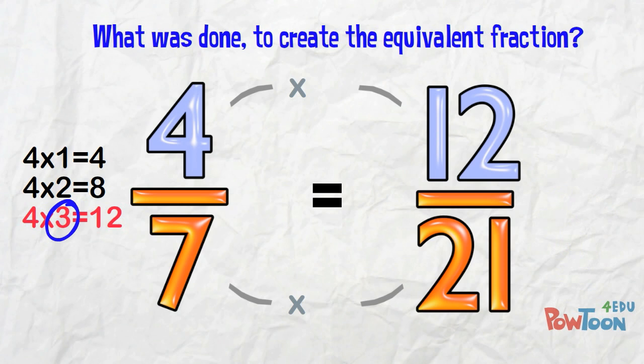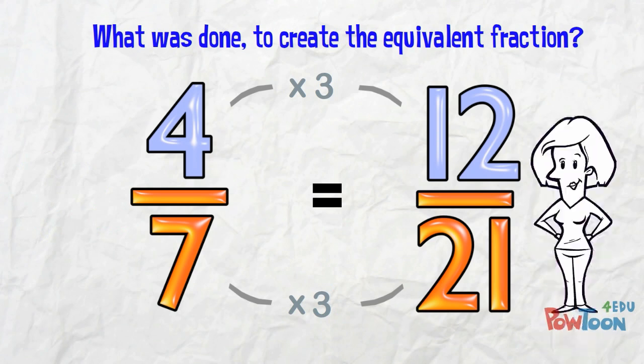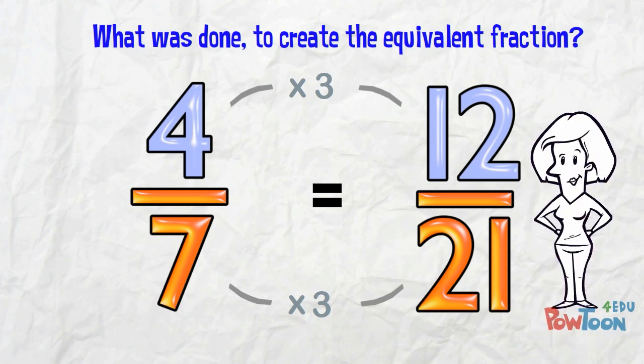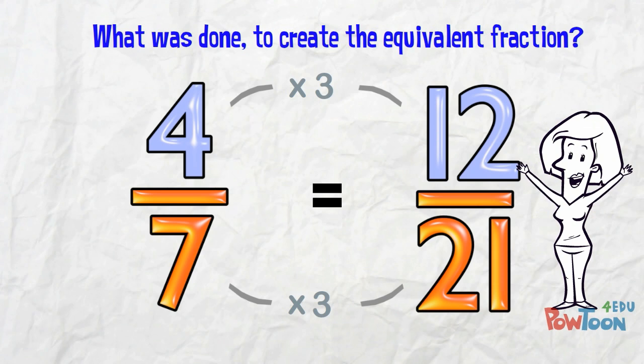And you can see, 4 times 3 is 12. The top was multiplied by 3, so the bottom is multiplied by 3. 7 times 3 is 21. That's how we got the new equivalent fraction.